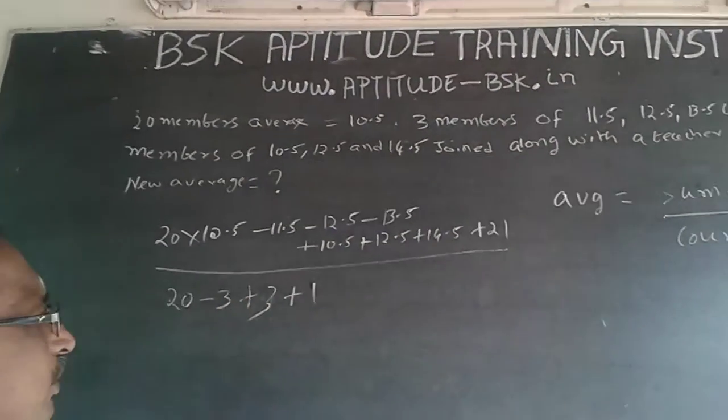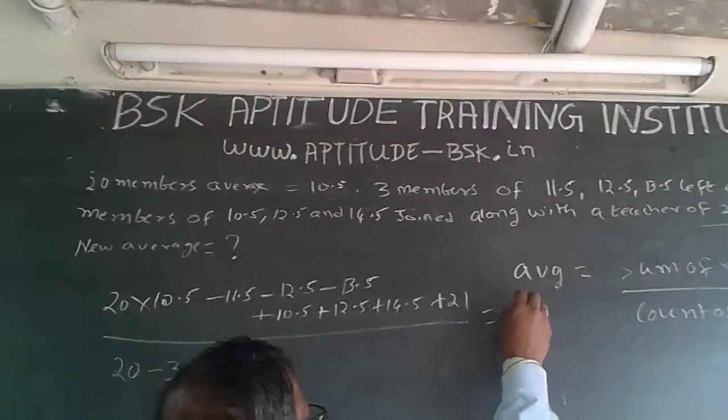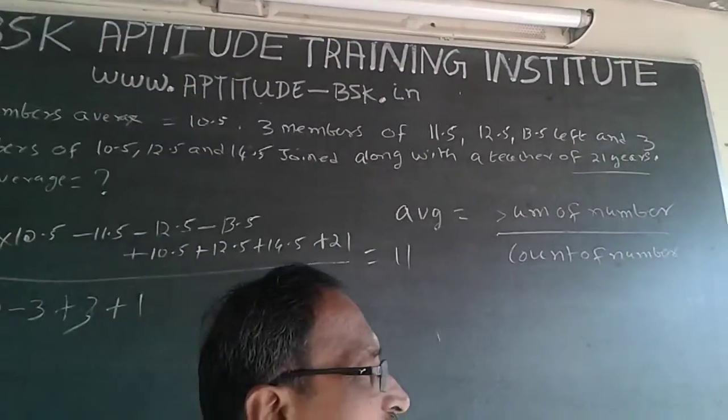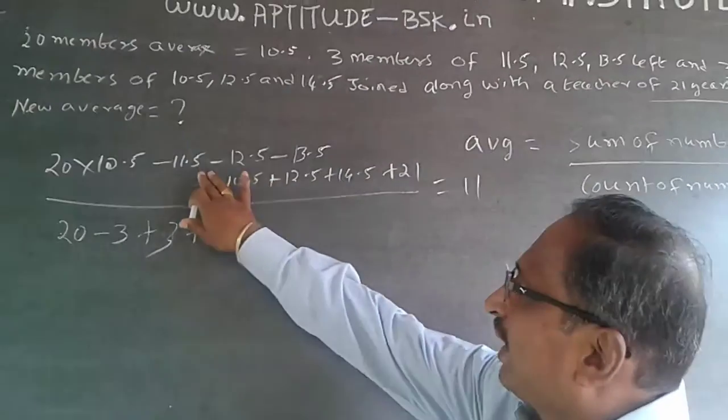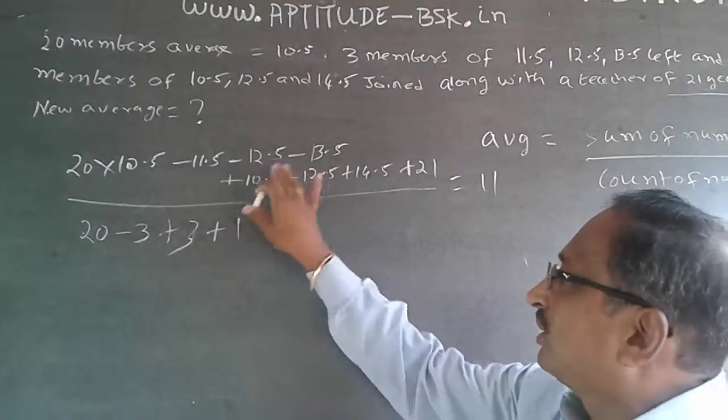Now let us solve this. Once we solve it, this will be equal to 11. The answer is 11. Just for the purpose of understanding, I have added all this, reduced all this and added all this.